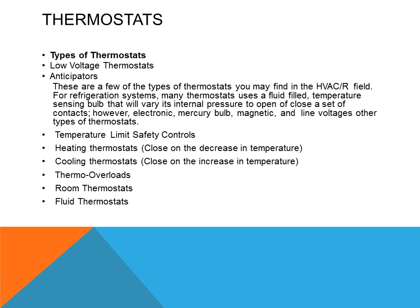There are several types of thermostats in the HVAC field. For refrigeration systems, many thermostats use a fluid-filled sensing bulb that expands by pressure built up from temperature changes, opening and closing a set of contacts. Other types include electronic, mercury bulb, magnetic, and line voltage thermostats. Heating thermostats close contacts on a decrease in temperature, while cooling thermostats close contacts on an increase in temperature.